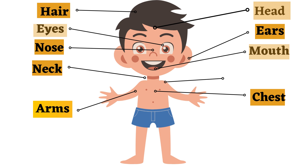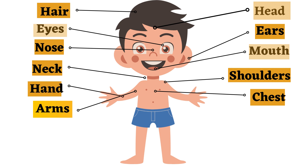Your arms are attached to your shoulders and are used for many things such as lifting, carrying, and reaching. You also have hands at the end of your arms, which are great for grasping objects. Up next is the stomach, also known as your tummy.